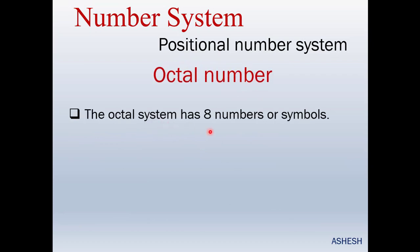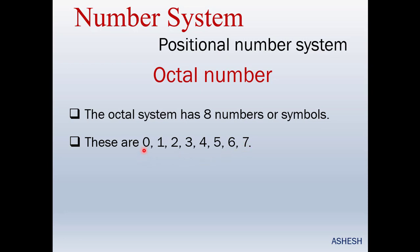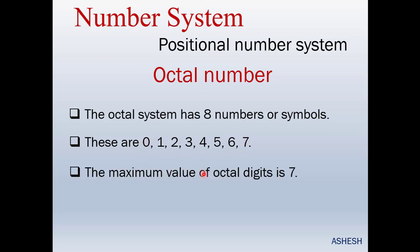The octal number system has 8 digits or symbols: 0, 1, 2, 3, 4, 5, 6, 7 — but not 8. The maximum value of an octal digit is 7, and the octal number system is based on 8.